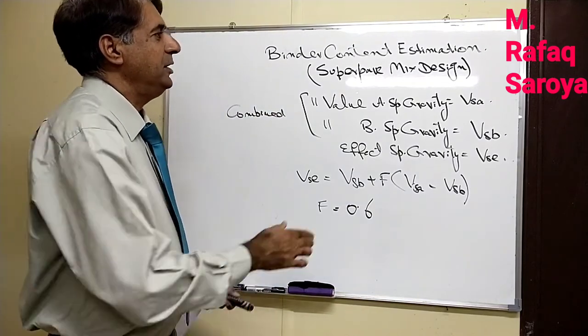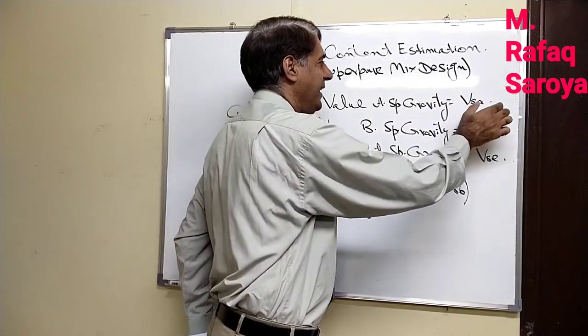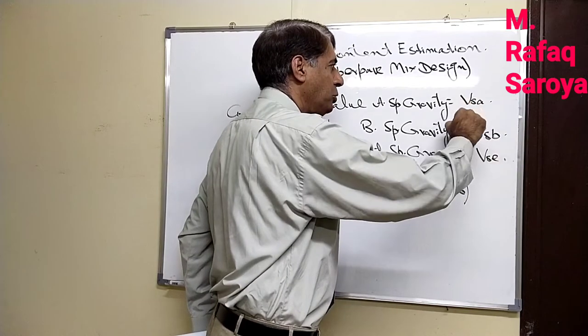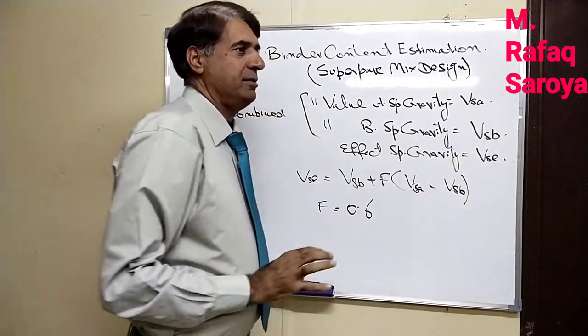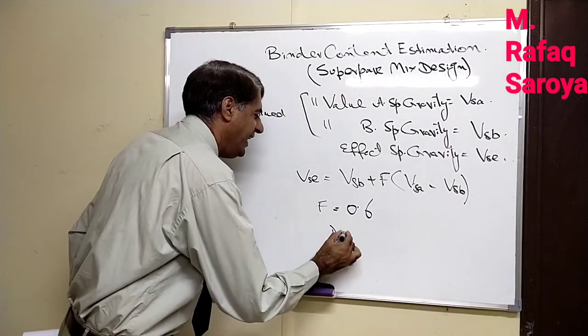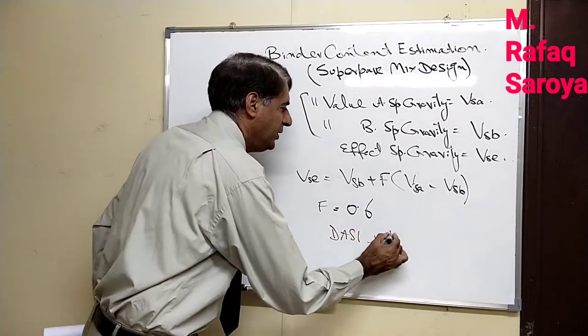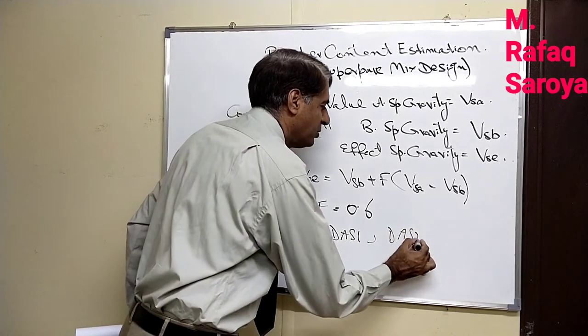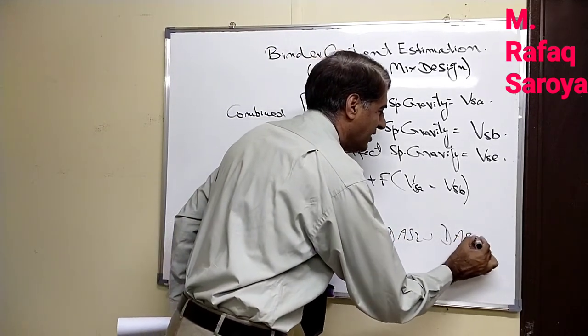So since values of GSA and GSB are known to us for other blends - because we have three blends, we have design aggregate structure number 1, we have design aggregate structure number 2, and we have design aggregate structure number 3.